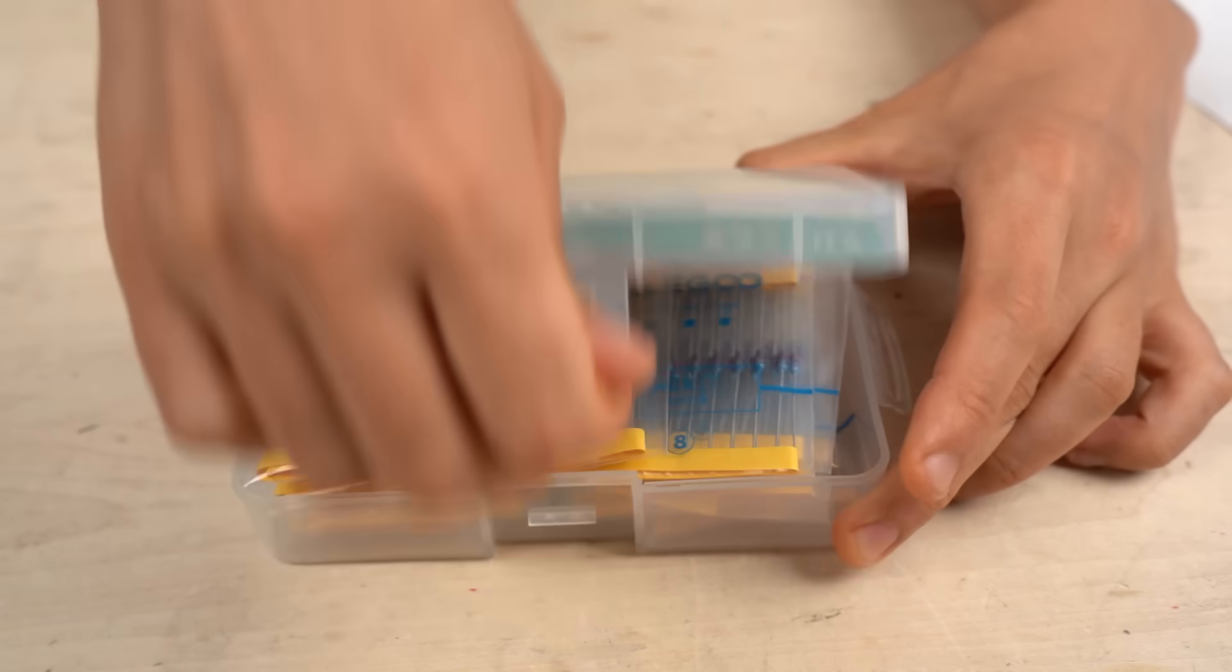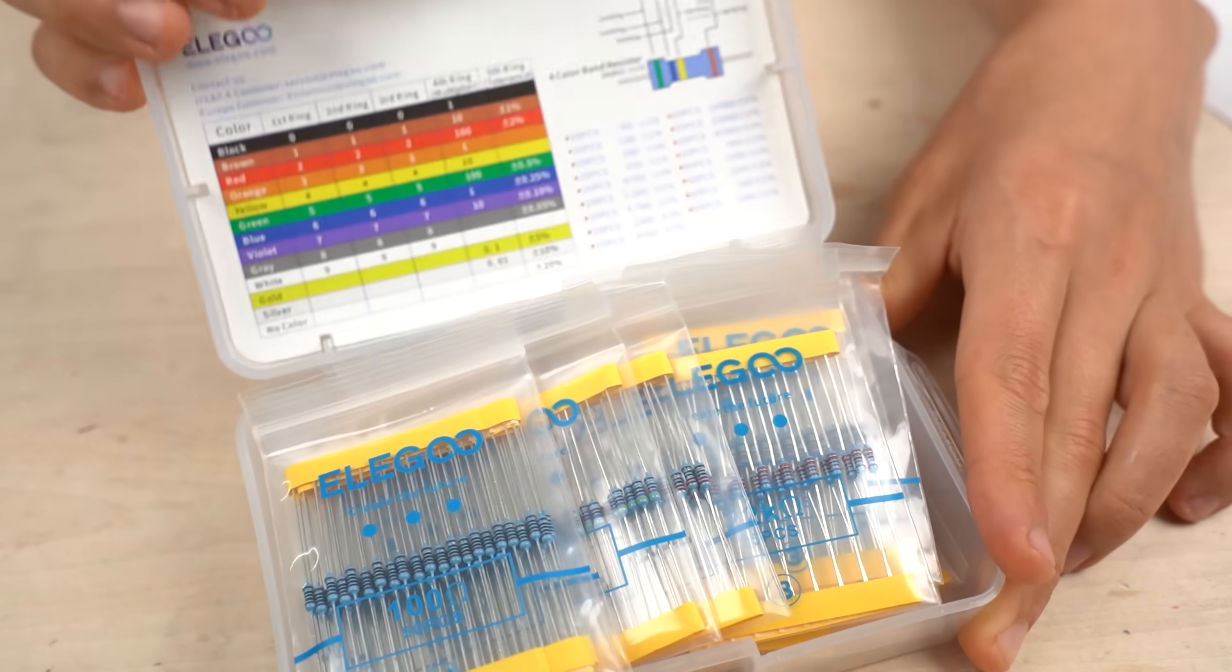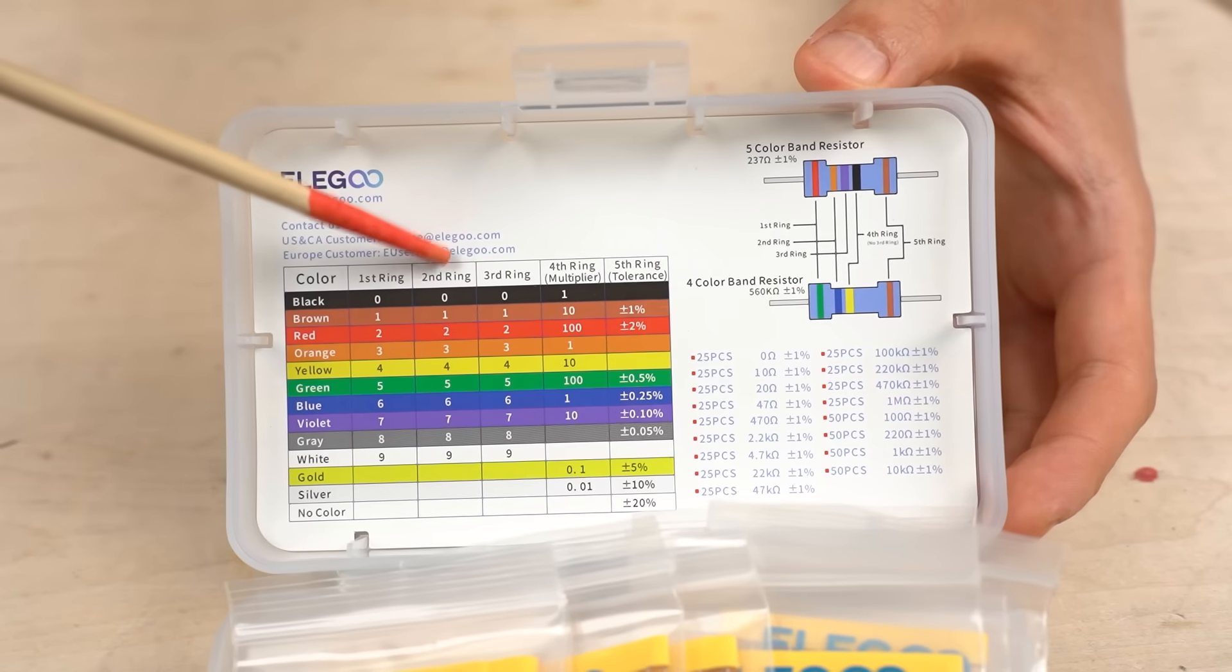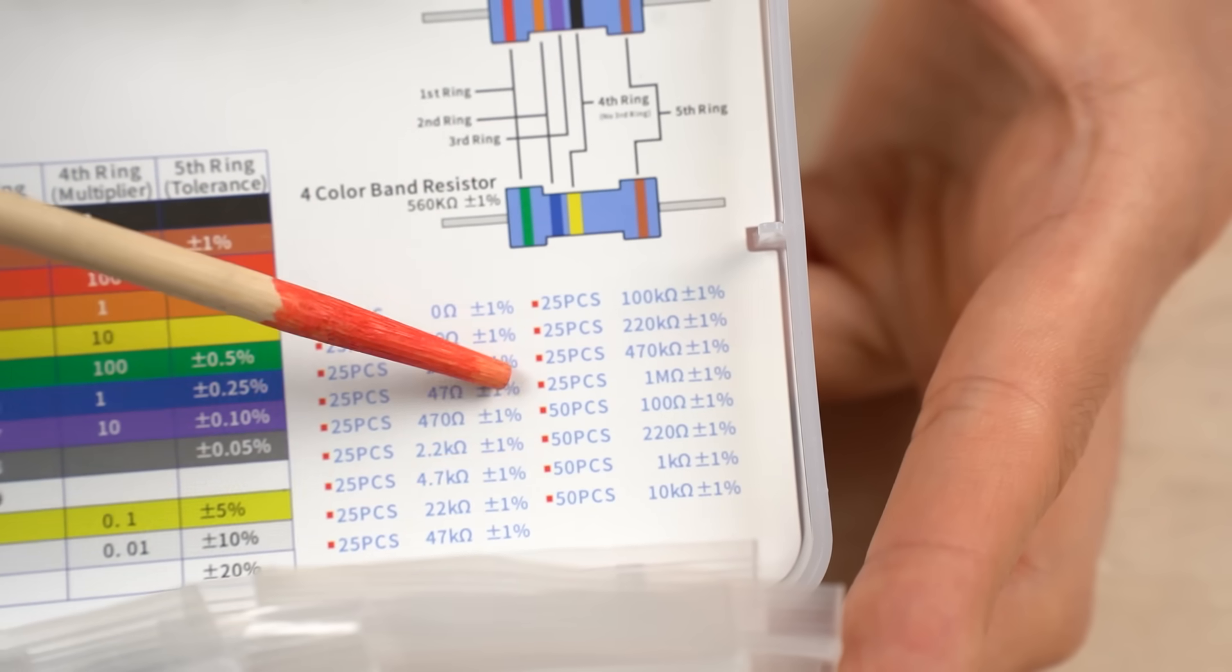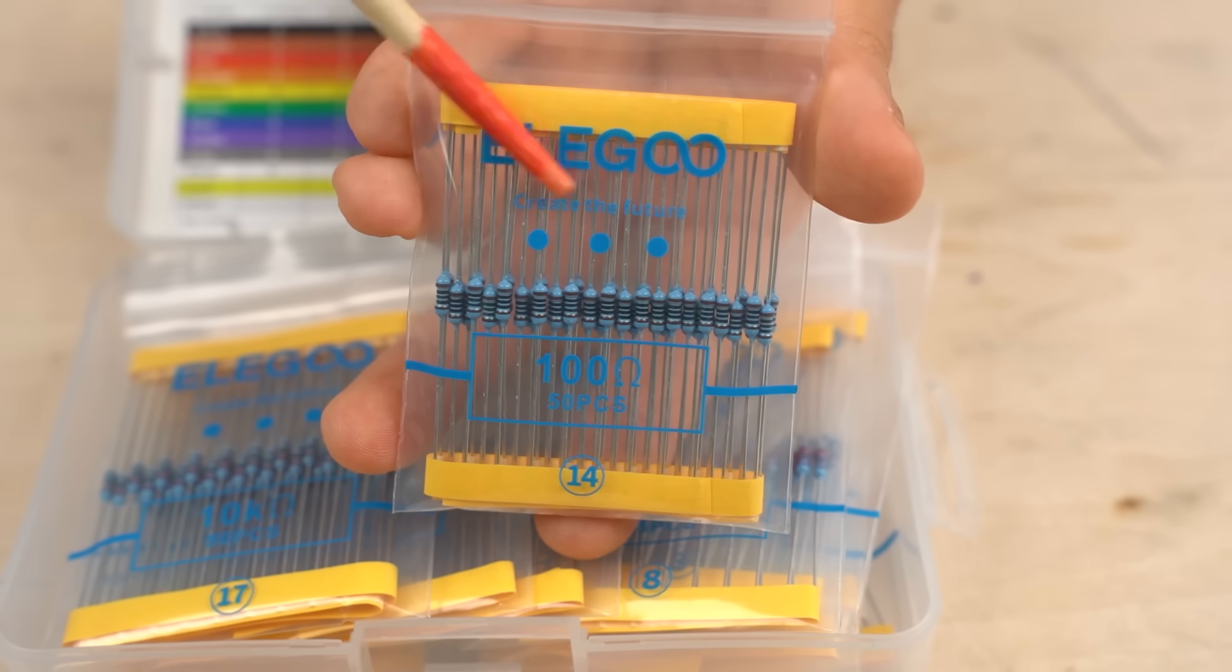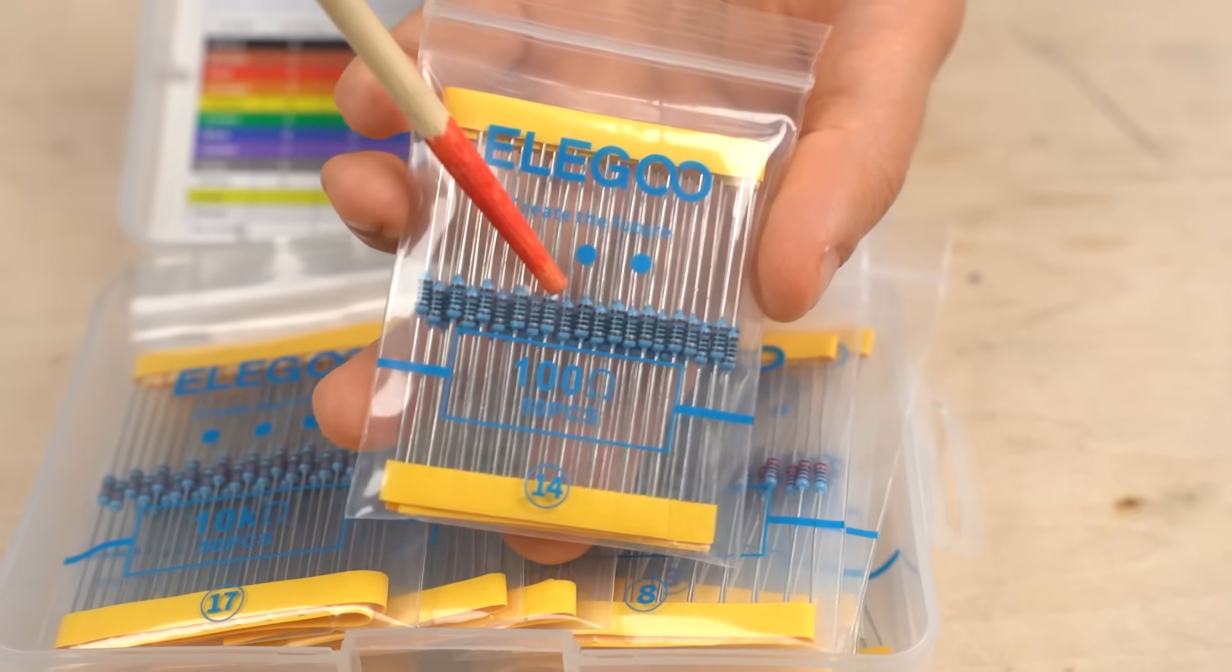I will open the Elegoo kit first. They are packaged neatly. There's an explanation of color codes. Nice. Mostly 25 resistors per resistance value, but there are 50 for commonly used values. Elegoo resistors are not cheap, so the packaging is neatly done.